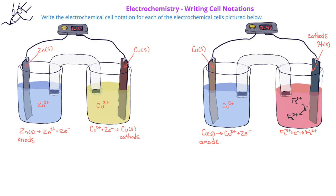In the first example, we see that we have a zinc zinc 2 plus half-cell, and on the other side, we have a copper 2 plus copper half-cell. This is the electrochemical cell we've been working with previously. We recall that the oxidation half-cell is on the left,